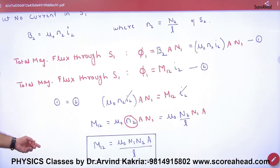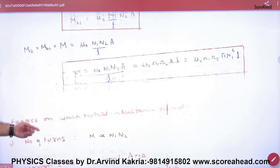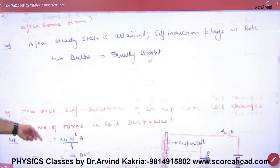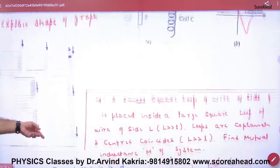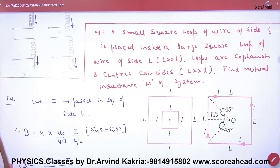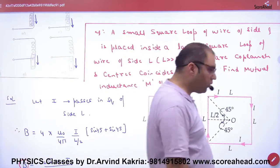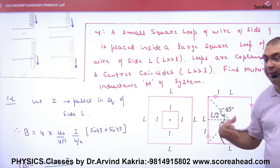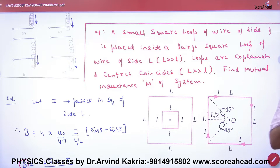This will be proved. To understand this better, here's an example. There will be many numericals on this. Let me do this example. In this, there are two loops, rectangular loops, square loops. In this, you have to find M. Find the M of these two.